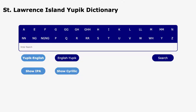In order to make this valuable resource more easily available to members of the Yupik community, we have implemented a basic searchable electronic interface. Using this interface, a user can browse through items in the dictionary.